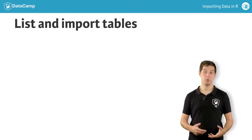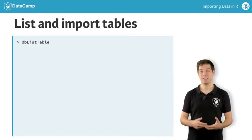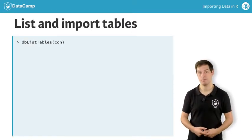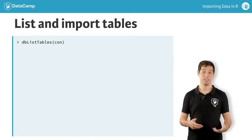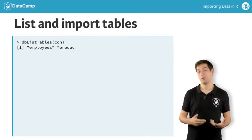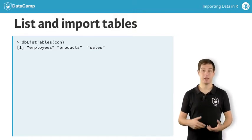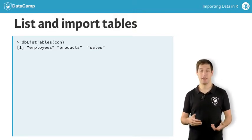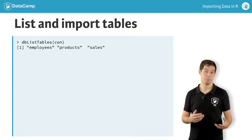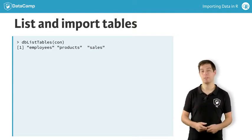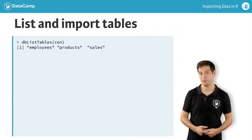You can do this with the dbListTables function. Simply pass the connection object — con in our case. As expected, we get a character vector of length 3, corresponding to the table names I've introduced earlier.